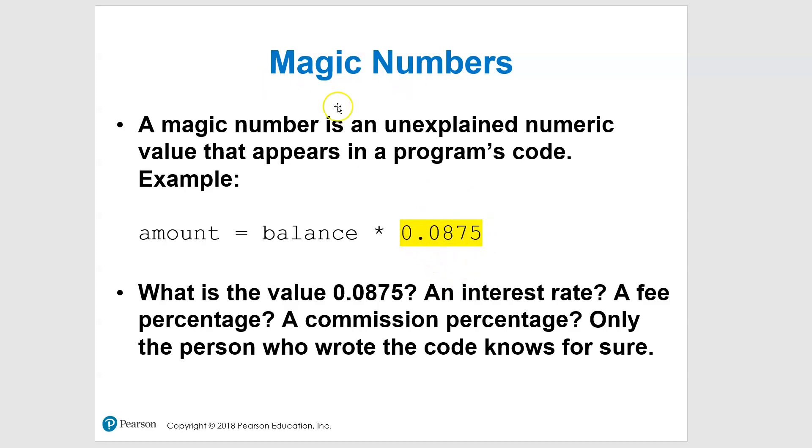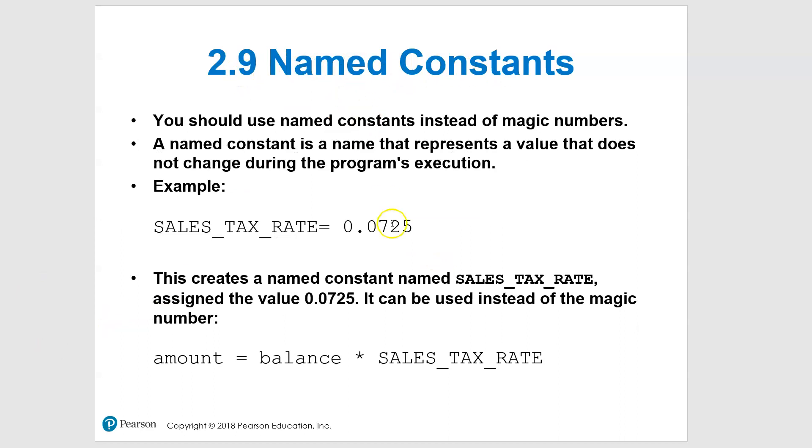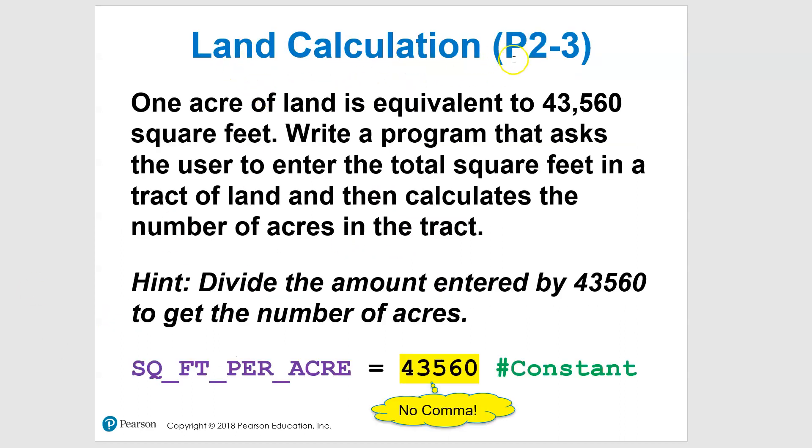Or even worse, you refer to it several places in your code, you forget to change it, and all that kind of stuff. So anyway, that's the deal: magic numbers versus named constants. Get in the habit of using them. Go ahead and use it for this very first program that you're going to do after this, the land calculation program.